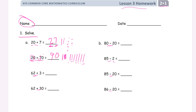Now here we're just adding the ones digits. 2 plus 3 is 5, so we still have 60, but now we have 65. And here we have 62 and 30. We're going to add this three. If we're using the digits, we're going to add that three to that six and we get nine. So we have nine tens. But we still have the two ones and zero ones, so it's just two. 92. That's how you use the digits for those.